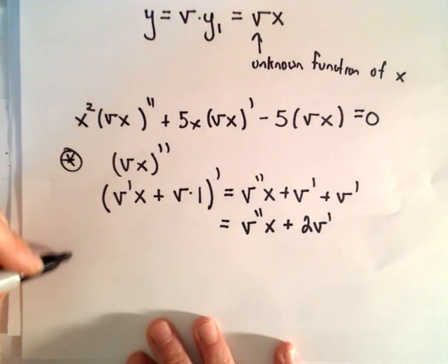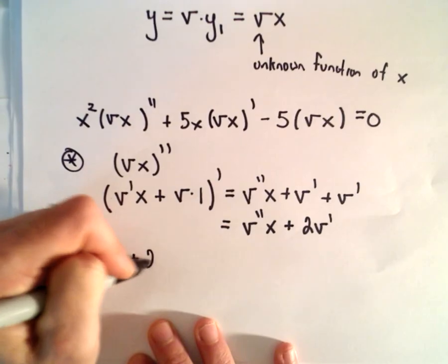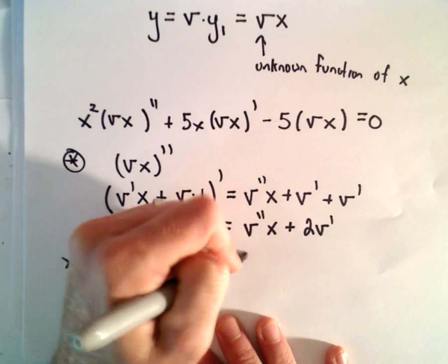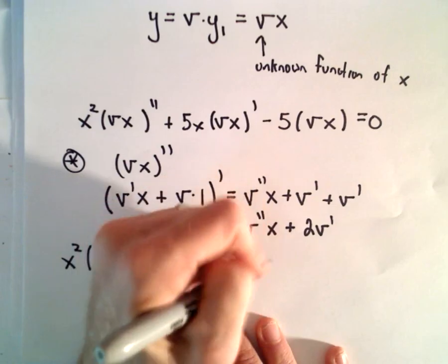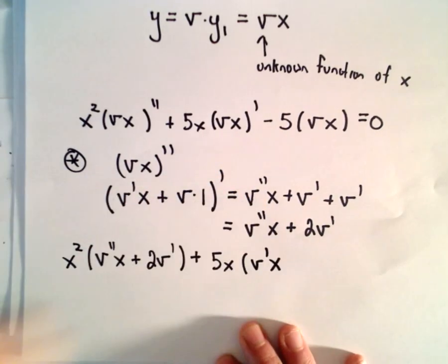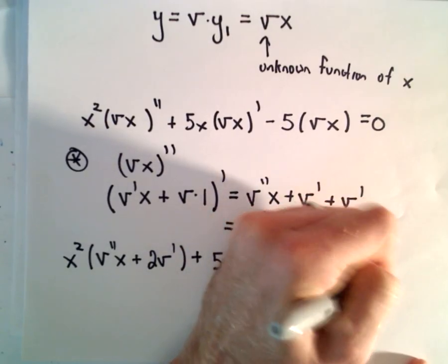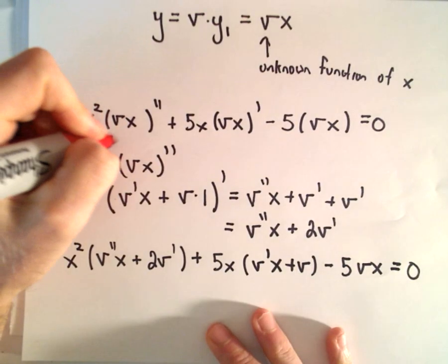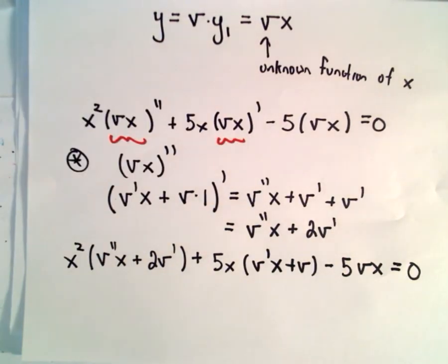Substituting in, we have x squared times (v''x + 2v') plus 5x times (v'x + v) minus 5vx equals 0. I found the second derivative and the first derivative, so that's all I did there.